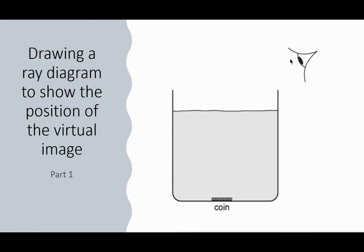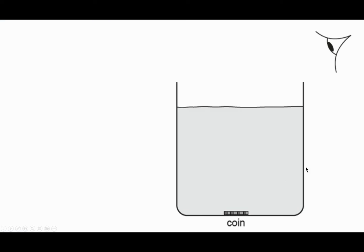Here we have from a past exam paper somebody looking into a beaker of water. Where would they actually see the coin? They don't see the coin in this position because light travels at different speeds in water compared to air, so it will refract or bend. Here it is enlarged a bit.